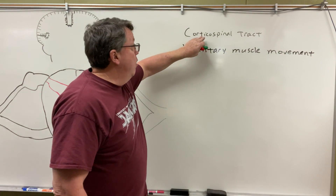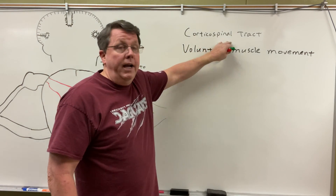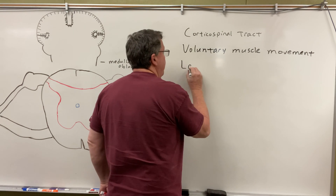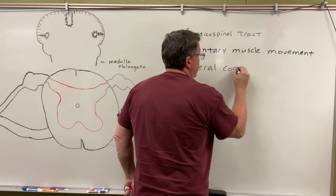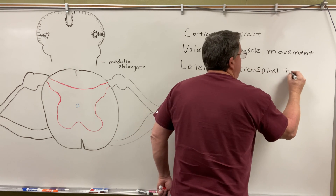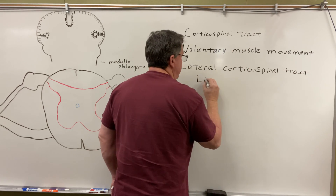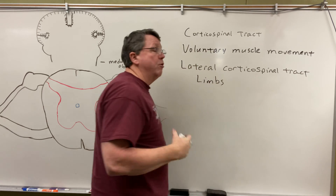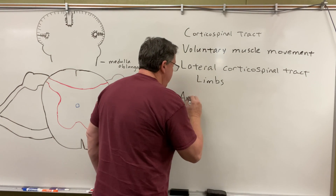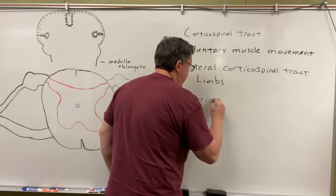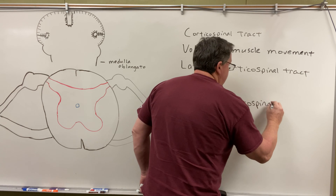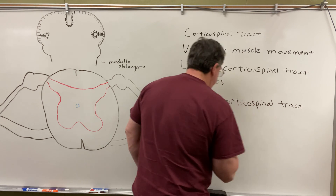As the name implies, it goes from the cortex to the spine. There are two parts to the corticospinal tract. The first part is called the lateral corticospinal tract, and what it is responsible for is movement of muscles in the limbs — so if I want to move my arms or my legs. The other one is the anterior corticospinal tract, which is responsible for movements of axial muscles.